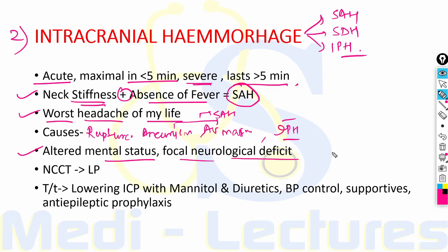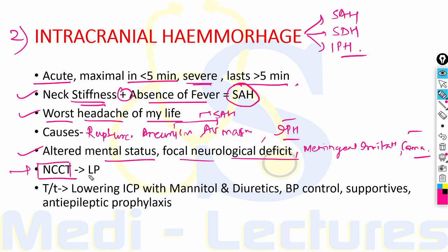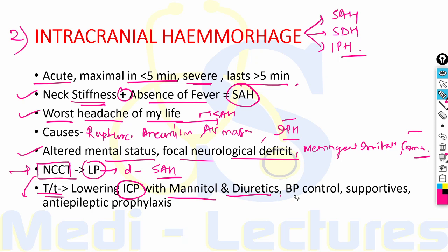In investigation, non-contrast CT of the head followed by lumbar puncture is very important. Lumbar puncture makes the definitive diagnosis of subarachnoid hemorrhage. NCCT head is important to rule out any space-occupying lesion — otherwise during lumbar puncture, herniation of the brainstem can lead to sudden death. Treatment includes lowering intracranial pressure with mannitol and diuretics, BP control if raised, supportive management, and anti-epileptic prophylaxis.